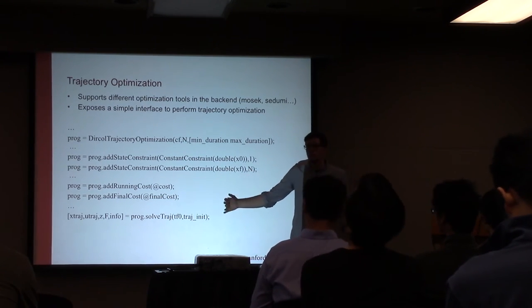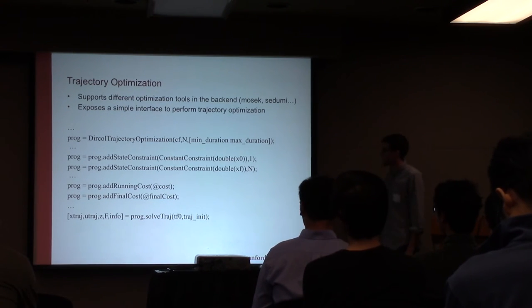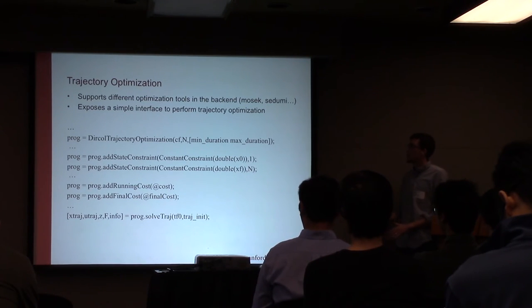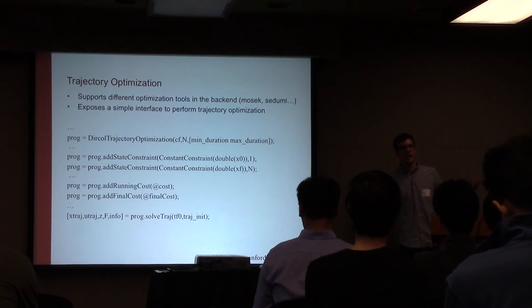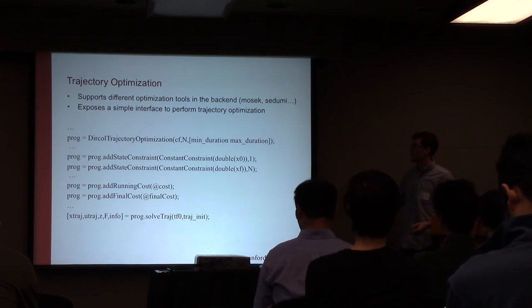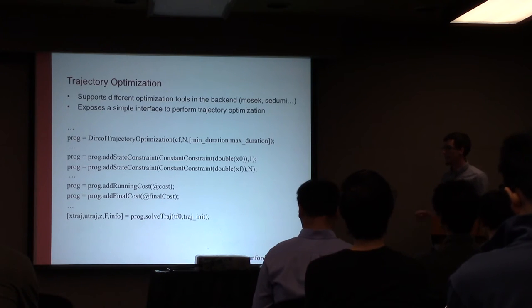Trajectory optimization, which is what we were talking about a little bit earlier with Julia, is another thing. Now that you have your system, you might not just want to simulate it, but you might want to actually be able to design trajectories with your system. So same problem as earlier. We have an initial state and a final state, and we're trying to design a trajectory that goes from start to end. Drake supports very simple ways of taking your systems and giving you a trajectory that respects these constraints.